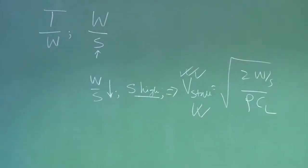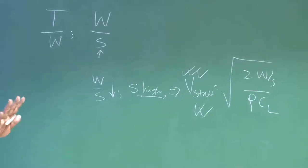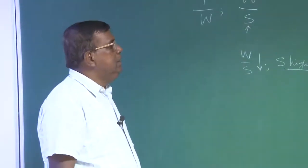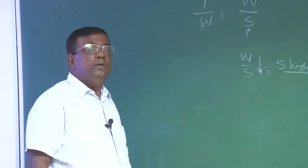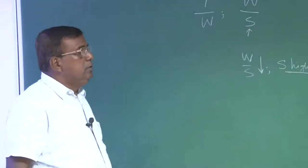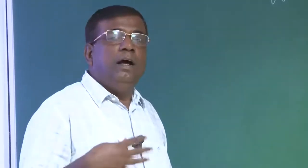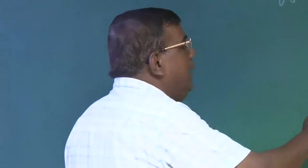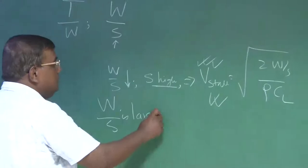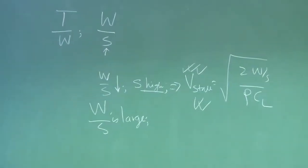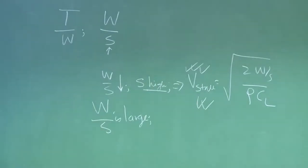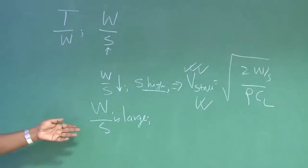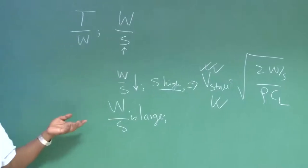We have the advantage of V stall or any operational requirement which is based on V stall — for example, takeoff and landing — they also get the advantage of V stall being low. We will have lower takeoff speed, lower landing speed. But because W by S is low, S is high — larger area, larger skin friction, larger drag. To compensate that, we need higher thrust. If W by S is large, area is relatively less. For the same weight, V stall will increase, but skin friction drag will be less, so thrust requirement may be lower.